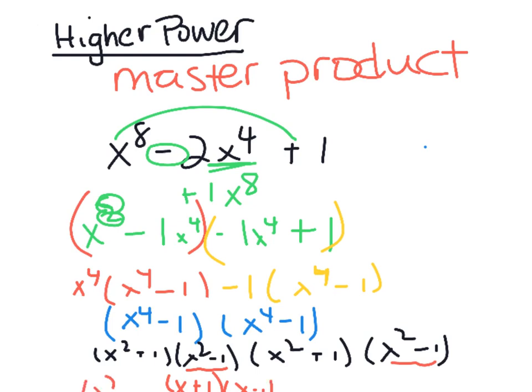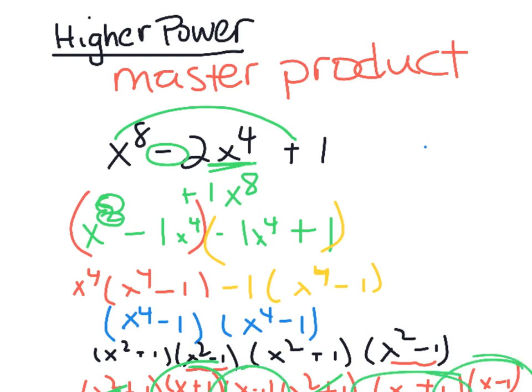Bringing everything together and collecting repeated factors: (x²+1) appears twice = (x²+1)², (x+1) appears twice = (x+1)², and (x−1) appears twice = (x−1)². Final answer: (x²+1)²(x+1)²(x−1)².